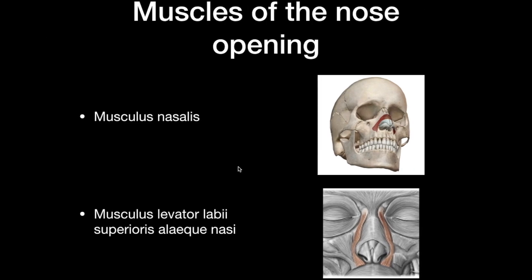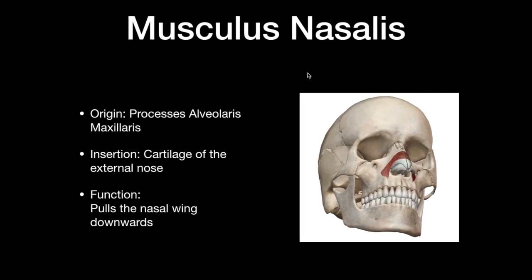The next muscle group is the muscles of the nose opening, which consists of two muscles: musculus nasalis and musculus levator labii superioris alaeque nasi. Musculus nasalis originates at the processus alveolaris maxillae and inserts at the cartilage of the external nose on both sides. Its function is to pull the nasal wings downwards, making the nasal opening smaller.